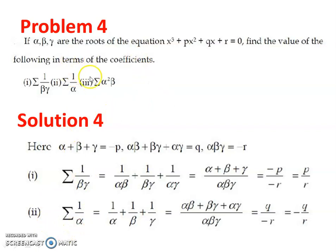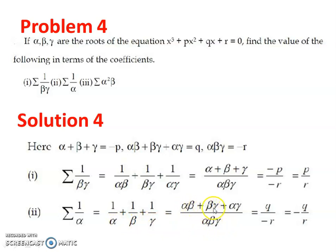Now for sigma(1/α): the summation varies over alpha, beta, and gamma, giving 1/α + 1/β + 1/γ. Taking the common denominator alpha·beta·gamma, the numerator becomes alpha·beta + beta·gamma + gamma·alpha. Since alpha·beta + beta·gamma + alpha·gamma = q and alpha·beta·gamma = -r, we get sigma(1/α) = q/(−r) = −q/r, expressed in terms of the coefficients.